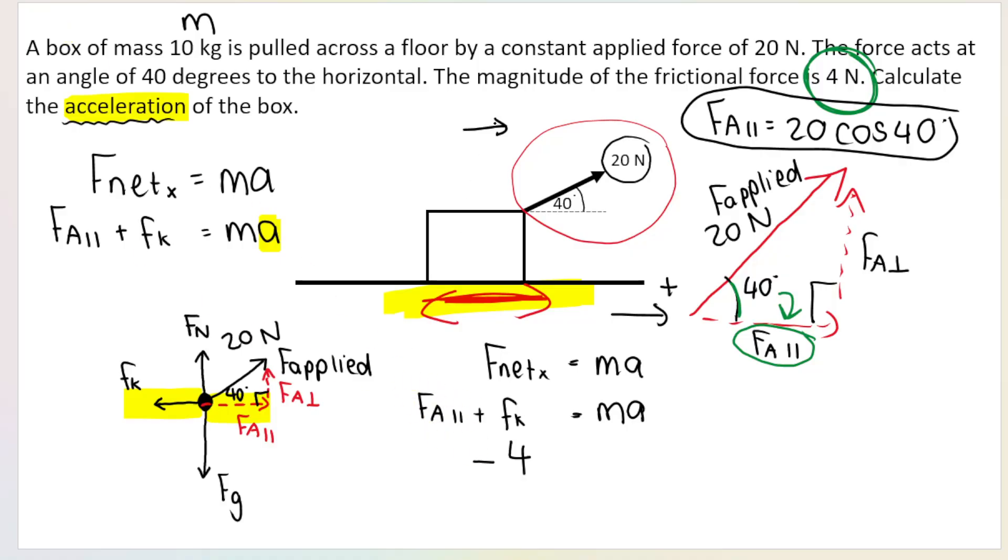So F applied parallel is going to the right. Take a look at which way that arrow is going. It's pointing to the right. So 20 cos 40. I'm going to substitute it in as a positive. 20 cos 40. So I've got 20 cos 40 minus 4 equals mass. This is the mass of the box. What is the mass of the box? The mass of the box is 10 kilograms. And acceleration is what I'm looking for.